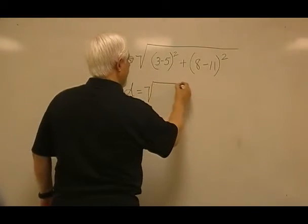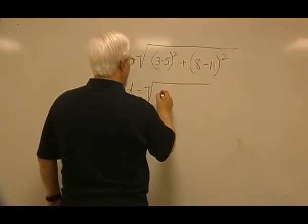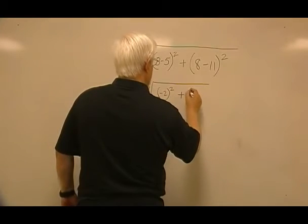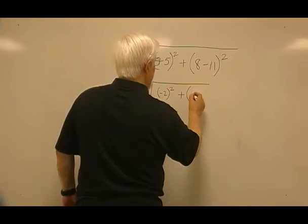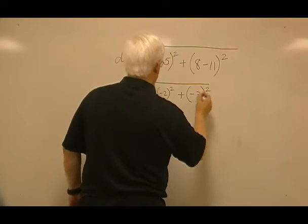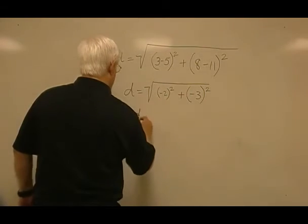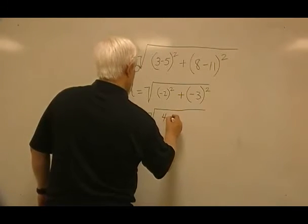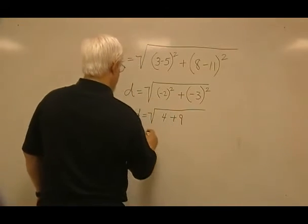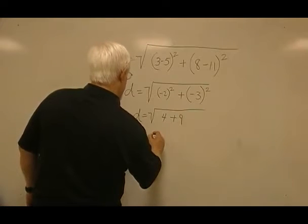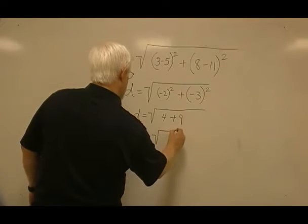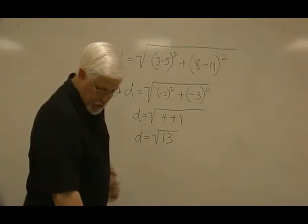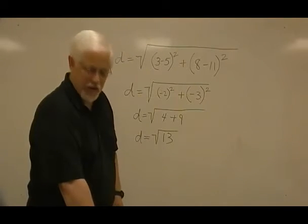Distance equals square root of 3 negative 5 would be negative 2 squared plus 8 negative 11 would be negative 3, also squared. Now we know from algebra that this is a very easy problem to solve. 4 plus 9. Distance equal square root of 13. The square root of 13. So the answer to number 7 is choice C, square root of 13.